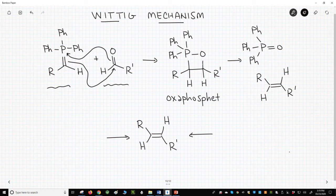an oxyphosphetane. This intermediate is unstable and decomposes rapidly to the alkene product and triphenyl phosphine oxide. A driving force for this reaction is making the very strong P=O double bond.